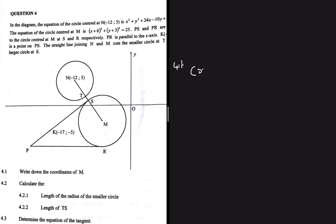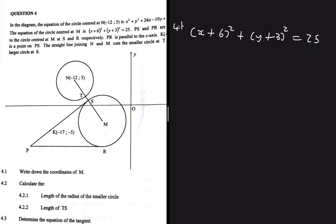We need to write down the coordinates of M. We're given the equation of the circle: (x+6)² + (y+3)² = 25. Let's extract the coordinates of M — the x-coordinate will be -6 and the y-coordinate will be -3.